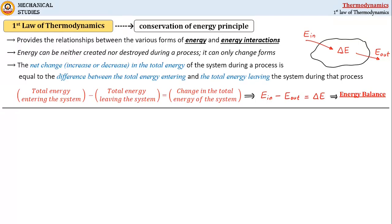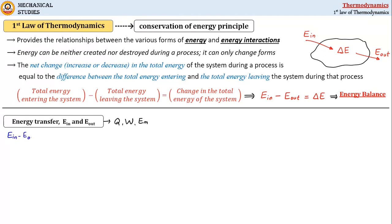Energy transfer — E_in and E_out — occurs because of energy interactions like heat, work, and energy transfer by mass (E_m). The net energy transfer across the system is written as E_in minus E_out, which equals net heat interactions (Q_in minus Q_out) plus net work interactions (W_in minus W_out) plus net energy transfer by mass (E_m_in minus E_m_out).